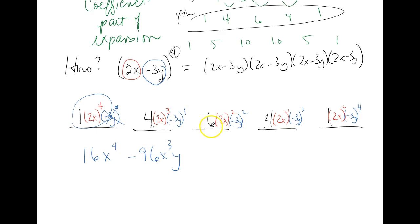Now I go to my next term. I'm going to do 6 times 2 squared, times negative 3 squared. So that'll be a 9, times a 4, times a 6. So 9 times 6 is 54, 54 times 4. Man, I wish I had a calculator. I'm getting 216, and it will be positive because I squared the negative. And then I'll have x squared, y squared.